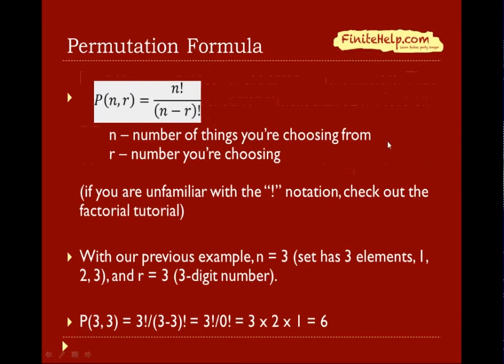And here is the formula that would help you determine the number of arrangements you have, the number of permutations you have, depending on the number of things you're choosing from and the number of things you're choosing to make the arrangement. If you're unfamiliar with the exclamation mark notation, this is the factorial. You can go check out the factorial tutorial.